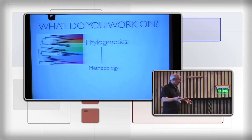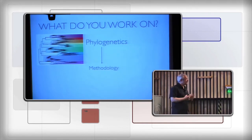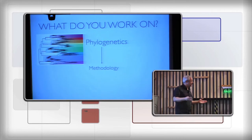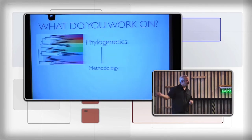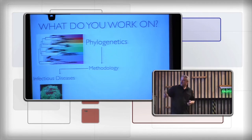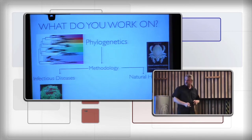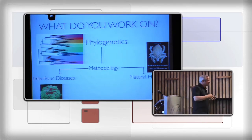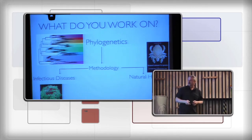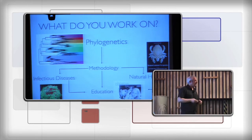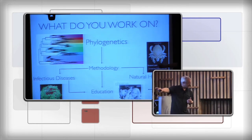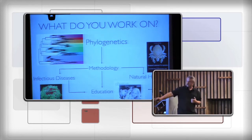A lot of people know our software ModelTest. This came out of our desire to figure out what model of evolution should we be using to estimate phylogenies. There were lots of models out there and no reasonable way to select amongst them, so we developed a little piece of software that helps people do that. And apparently people like it because it gets cited a lot. We take this phylogenetic methodology and apply it in infectious disease and natural history, and we also wrap it around in education — we've developed educational software as well.